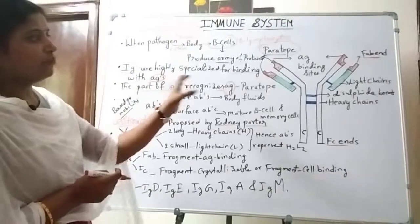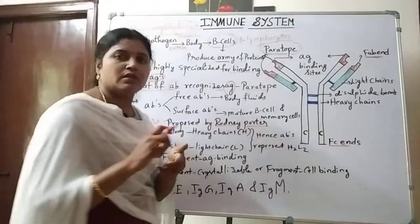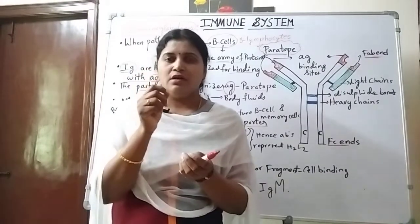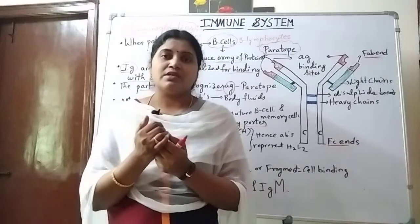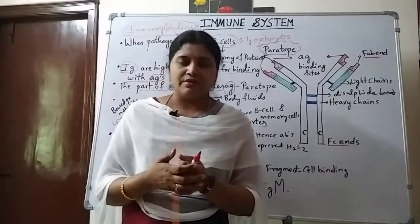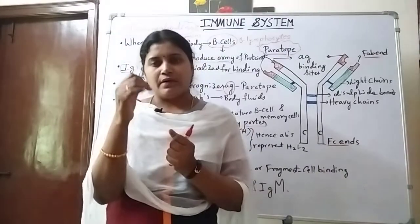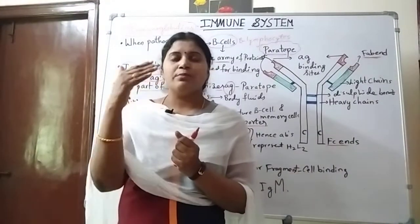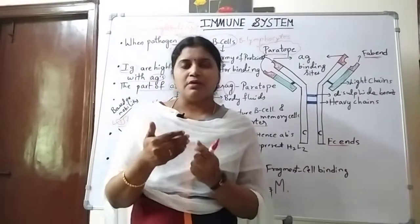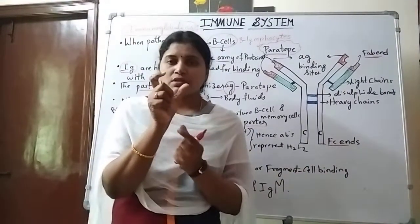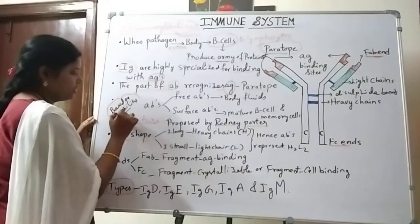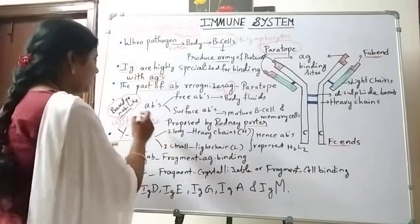Based on their mobility — mobility means moving nature — antibodies are two types. One particle can move fast if it is small in size. For example, in a running race, those who are very thin can run fast, while those with huge weight cannot run fast. Similarly, proteins or particles which are very small in size can move fast — their mobility is high. So based on their mobility, antibodies are two types.